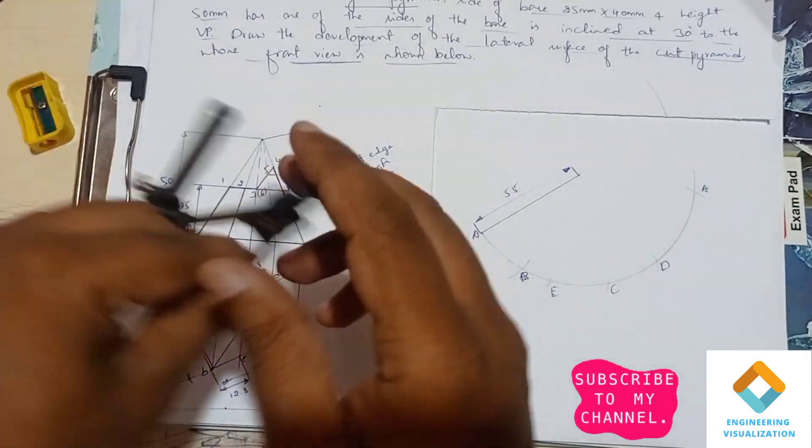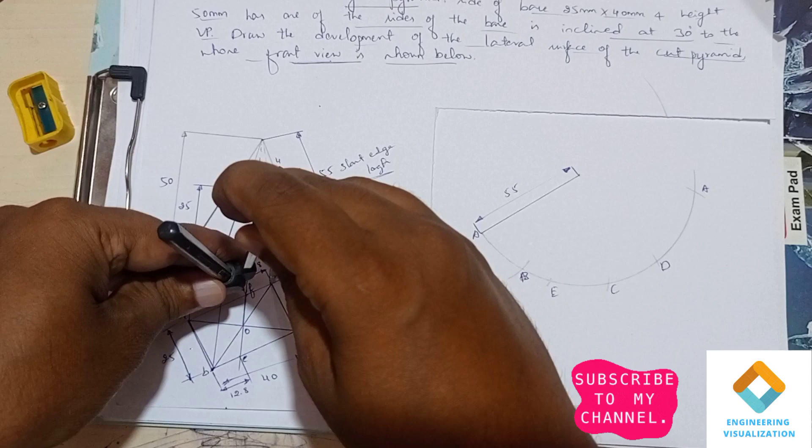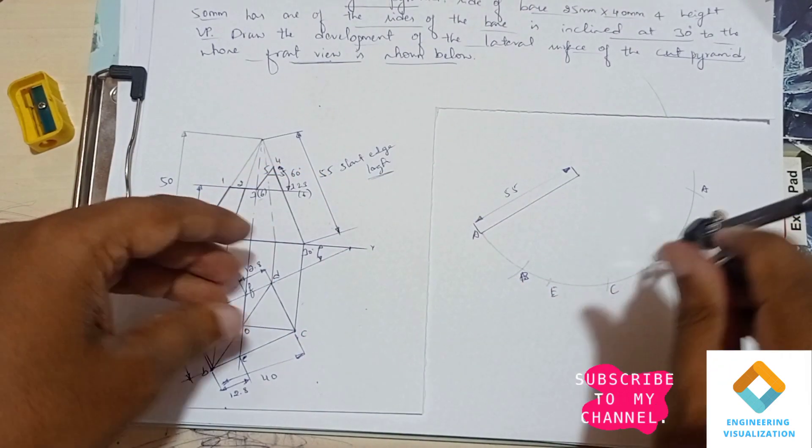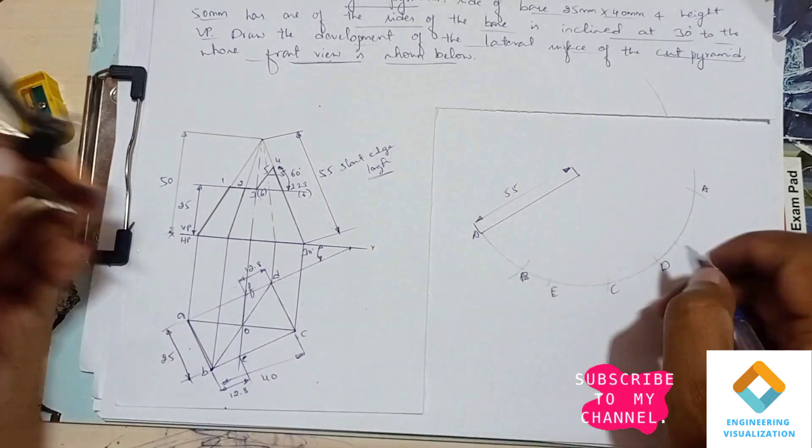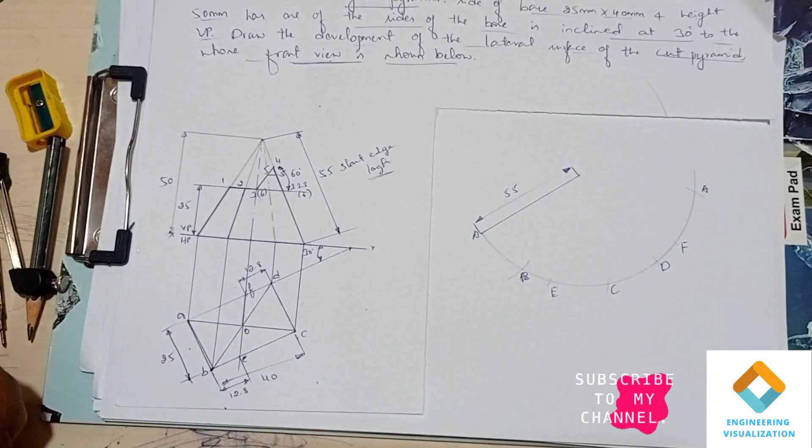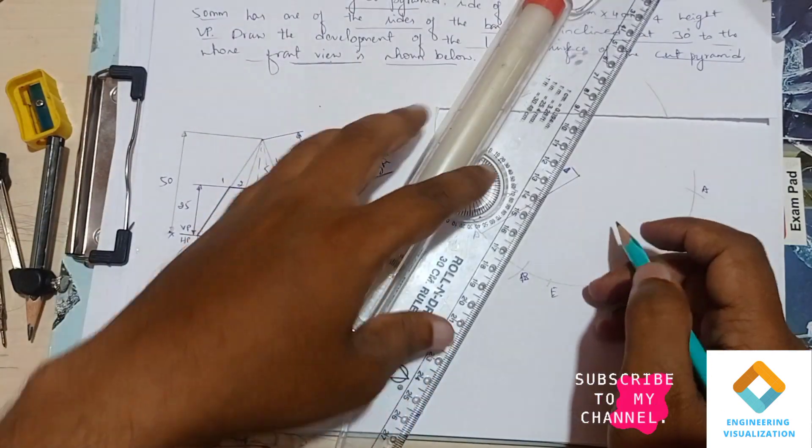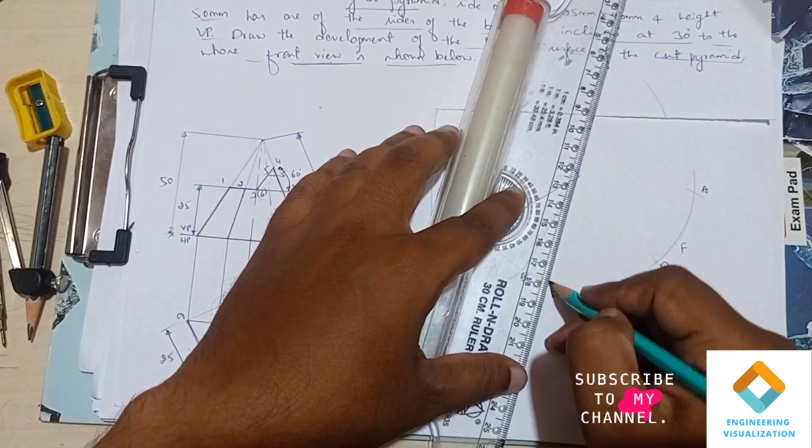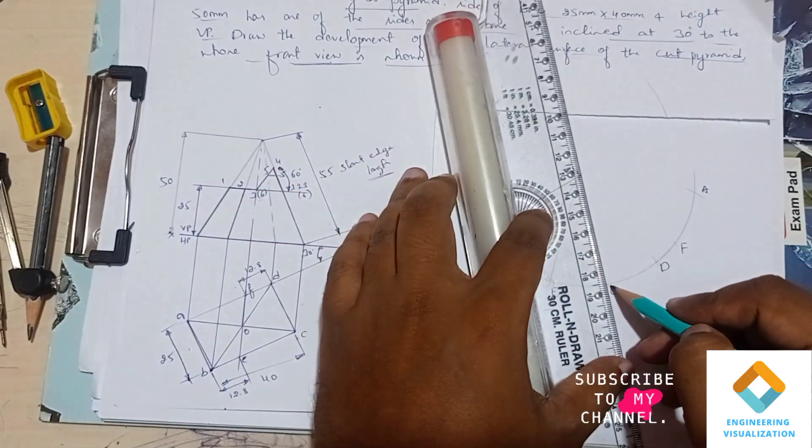Now the another point we have left, that is D to F. D to F is 12.8 again, so cut it. Now we have to join all these points with the reference point. Use the scale to join all these points. With the help of the scale, you can connect with straight lines.